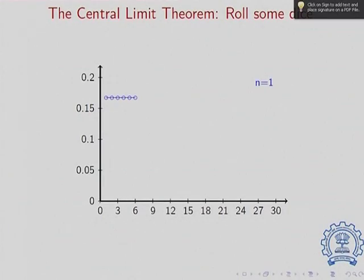Here is a simple illustration: rolling a single fair die, the values 1, 2, 3, 4, 5, 6 each appear with probability 1/6 — approximately 0.167 each. This is a discrete uniform distribution, not bell-shaped. But as you start averaging results of many die rolls, the distribution of those averages will start converging to a normal distribution — illustrating the Central Limit Theorem in action.